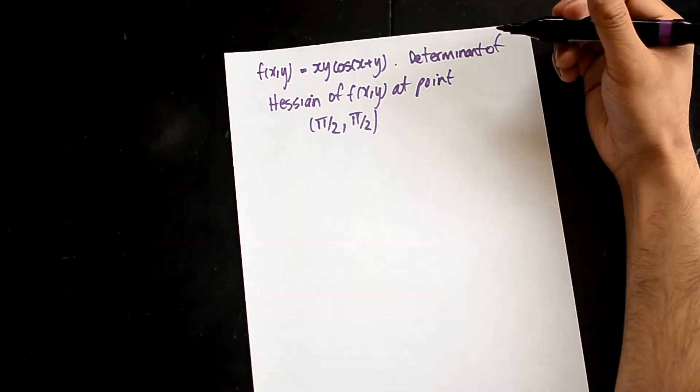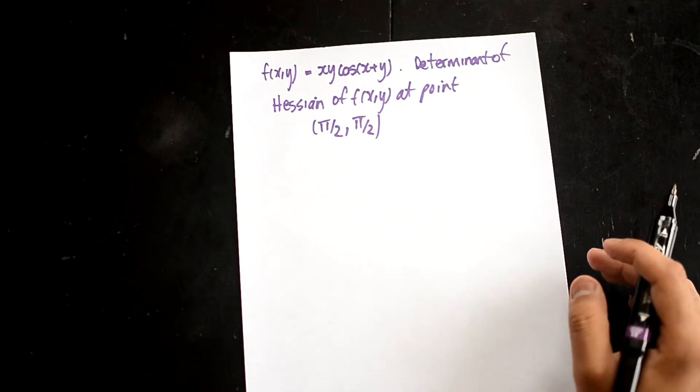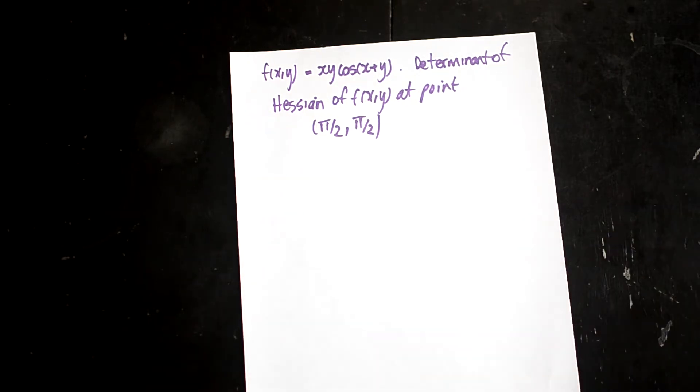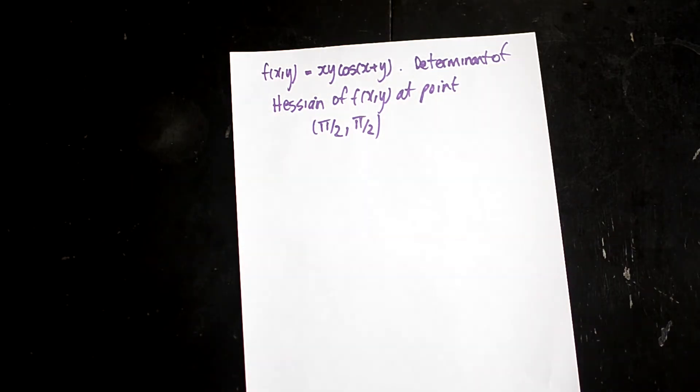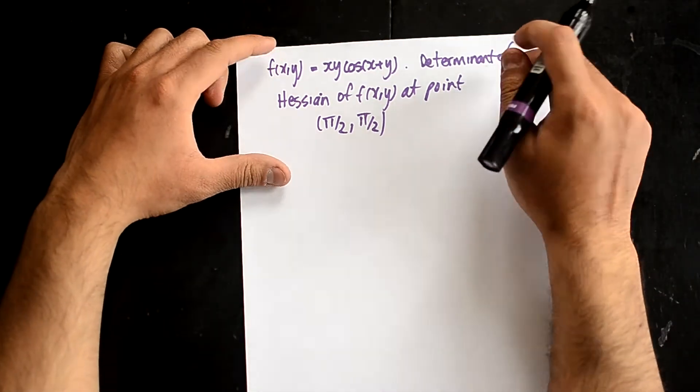In a previous video, I've looked at calculating the determinant of the Hessian, and in this one we're going to be doing another problem just so that you can get used to it. The last one I think I was using cosh or sinh, which might have been a bit different to some of the problems that you might have encountered. So for this one, we've got xy cos(x+y).